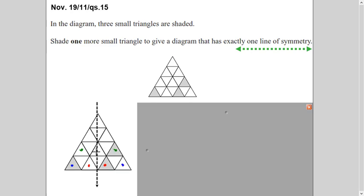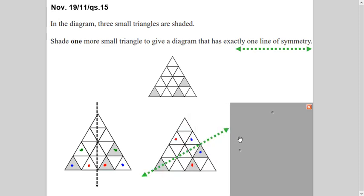And this one, if you fold, will fall here, right? So you have to draw three, I mean, you have to shade three triangles to make it symmetry. Whereas question is saying one more small triangle shade. So this is out of question. This can't be line of symmetry.